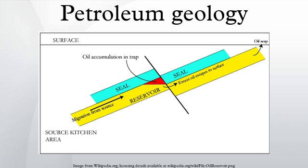The seal, or cap rock, is a unit with low permeability that impedes the escape of hydrocarbons from the reservoir rock.